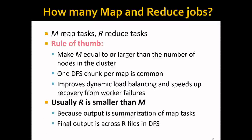Besides dealing with failures, another question is how to choose M and R — the number of map and reduce jobs. The rule of thumb is to make M equal to or larger than the number of nodes in the cluster, with one distributed file system chunk per map being a common choice. This improves dynamic load balancing and speeds up recovery from worker failures. For example, if you only allow one map task per node and a worker fails, you must wait for a free node. But if one node can take multiple map tasks, it doesn't have to wait and load balancing is much better.